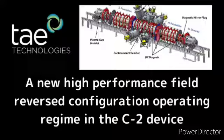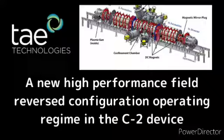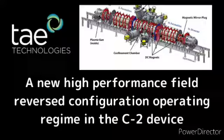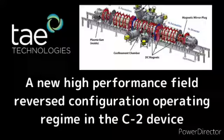Larger quadrupole currents are effective in stabilizing the N=0 mode, but they also have negative effects: they degrade NB fast ion confinement by breaking axisymmetry, and they also degrade the FRC layer confinement by opening magnetic field lines.